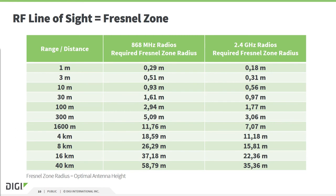Here are some examples. For the 868 MHz-based product available in Europe, the maximum range is 14 kilometers, and you can see the antenna height for a free Fresnel zone is around 37 meters to achieve that maximum range. For the 2.4 GHz-based product available worldwide, you need already 3 meters antenna height for a free Fresnel zone at a range of 300 meters.